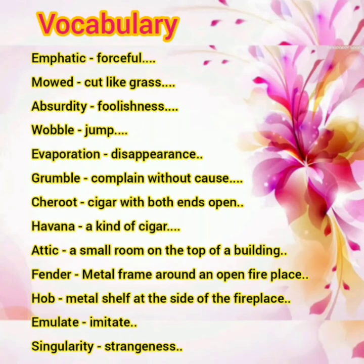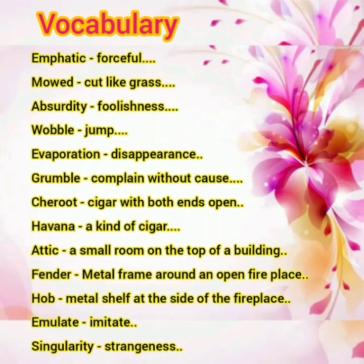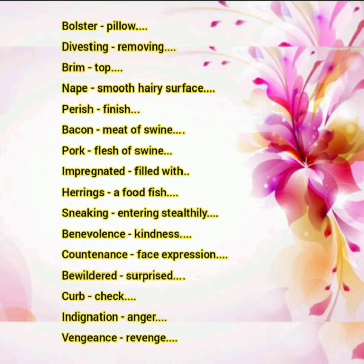Dear students, let us have a look at vocabulary used in the play. Emphatic means forceful mood. Cut like grass means absurdity or foolishness. Wobble means to jump or shake. Evaporation means disappearance. Grumble means to complain without any cause. Cheroot means a cigar with both ends open. Havana means a kind of cigar. Attic means a small room on the top of a building. Fender means a metal frame around an open fireplace. Hob means a metal shelf at the side of the fireplace. Emulate means to imitate. Singularity means strangeness. Bolster means pillow. Divesting means removing. Brim means top. Nap means a smooth, hairy surface.